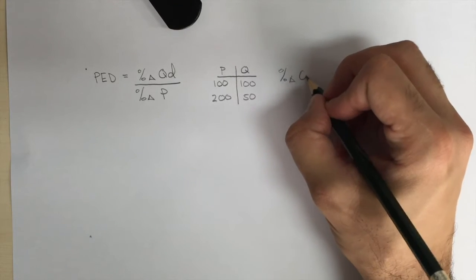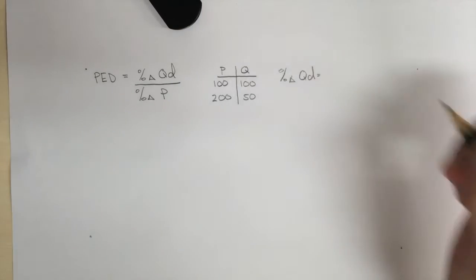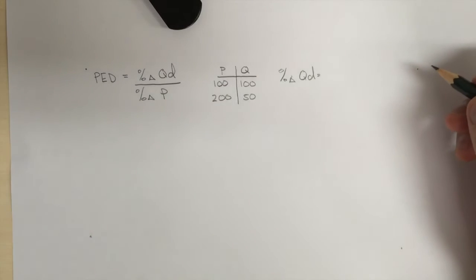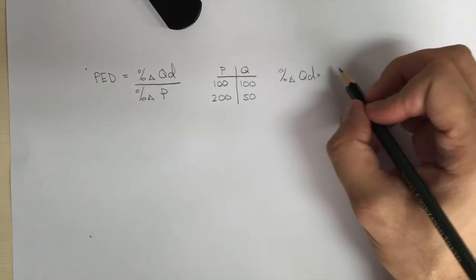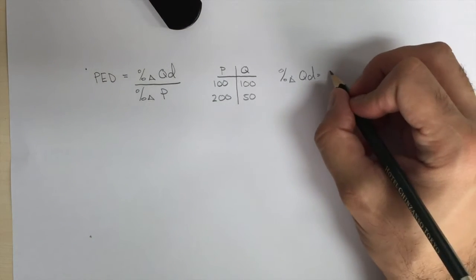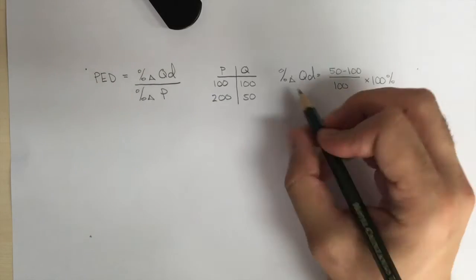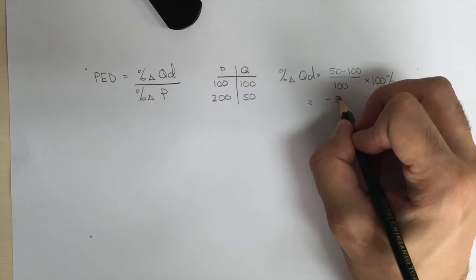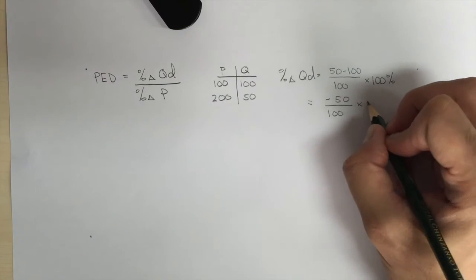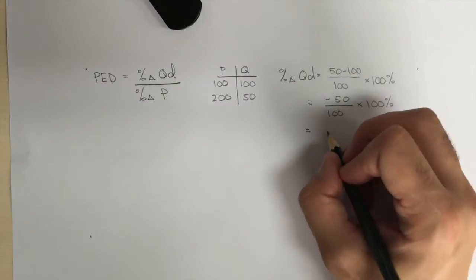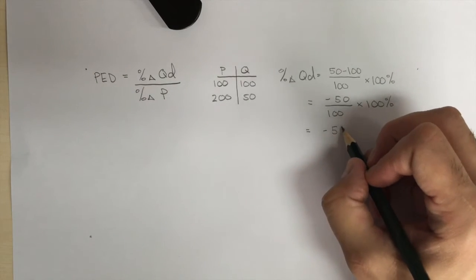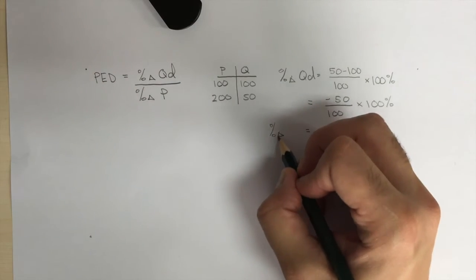So the percent change in quantity demanded is calculated by doing the following. Taking the new quantity demanded, which is 50, subtracting the old quantity demanded, which is 100, and dividing by the old quantity demanded, which is 100, and multiplying by 100%. That will give us minus 50 over 100 times 100%, which gives us minus 50% as our percent change in quantity demanded.